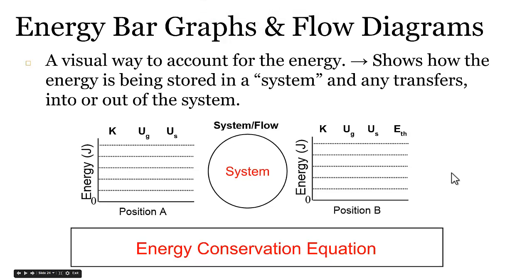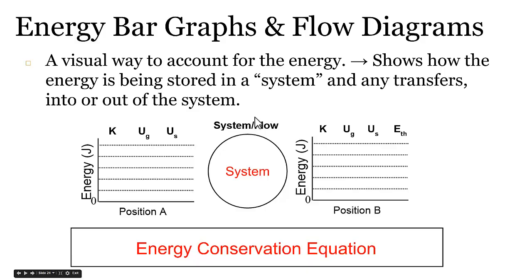Solving an energy problem is just like any other physics problem. You first want to think about it conceptually to try to wrap your mind around what is going on before we start assigning values. When dealing with energy problems, we use something called an energy bar graph and flow diagram. It's a visual way to account for the energy involved in some kind of problem or event, showing how energy is stored in a system and any transfers into or out of that system.